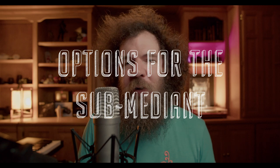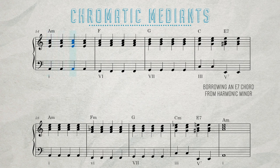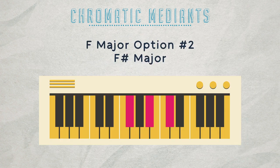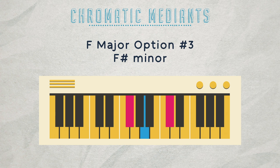And now we get to the options for our sub-mediant. The first option is a minor six, which is F minor. Our second option is a sharp six chord, which gives us F sharp major. And our third option is a minor sharp six chord, F sharp minor.